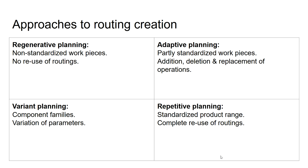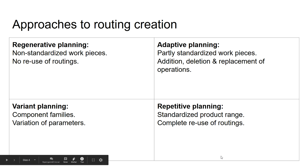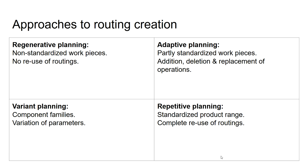There are different approaches for creating a routing. If you are working with non-standardized work pieces, like one-of-a-kind products, you will be applying something referred to as regenerative planning. This means there is no reuse of routings — every routing is created from scratch. Then you can have adaptive planning, which applies when you have partly standardized work pieces. Here you use existing routings and elaborate on them by adding, deleting, or replacing operations or sequences of operations.